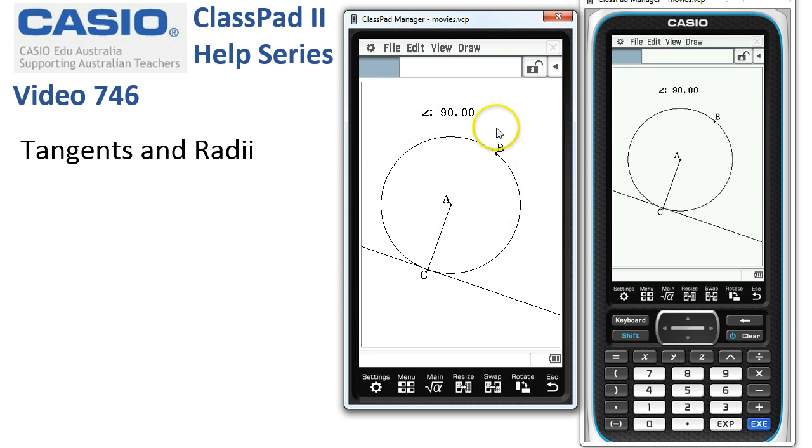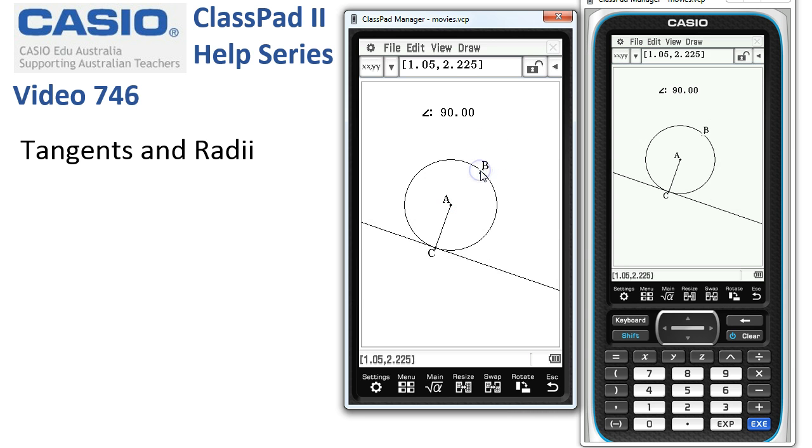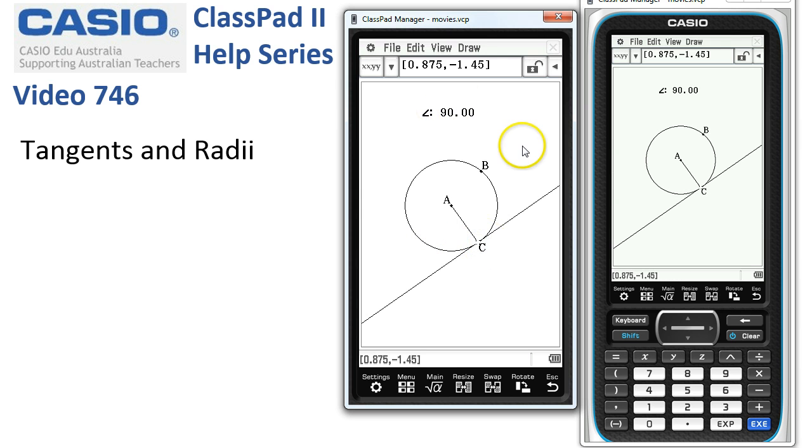Now what happens to this angle as things change? What happens if we make the diameter a bit smaller? Let's reduce the distance from B to A, but it's still 90. If I tap onto C now and move C around here, it's still 90.